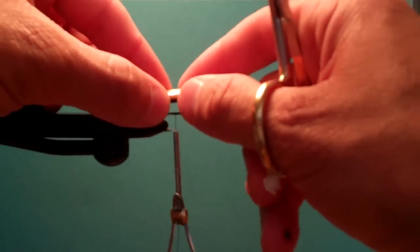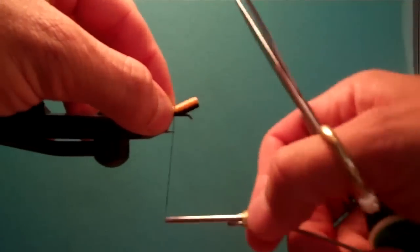Wrap back towards the point dividing the hook into thirds. Wrap that down.